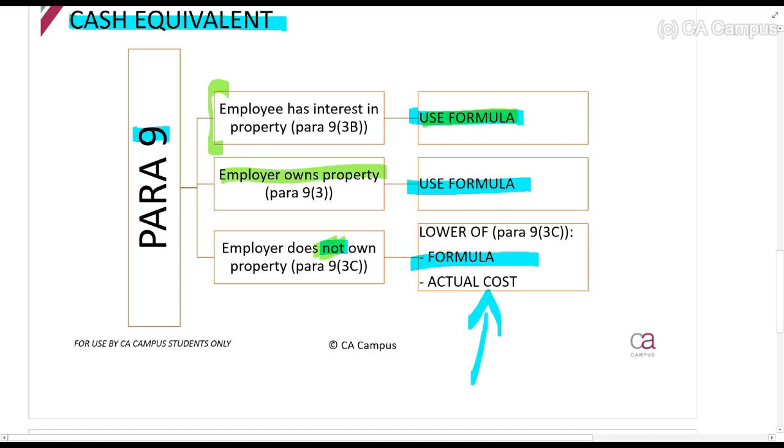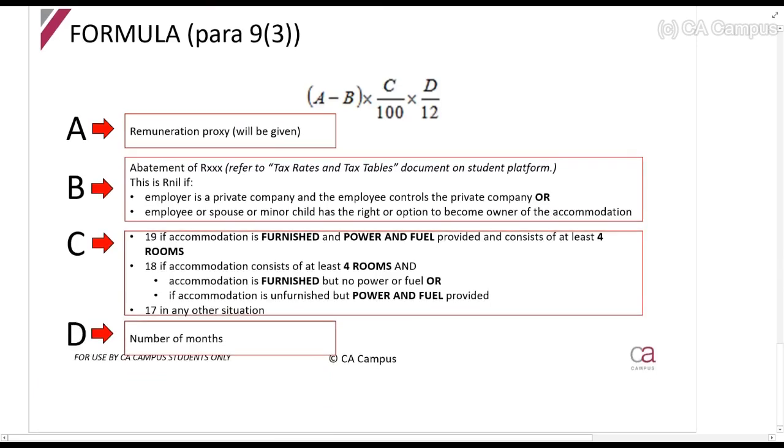So what is the formula? You can find it in your act as well: (A - B) × C/100 × D/12. First thing is A. A is the remuneration proxy - this amount will be given to you in the exam. The idea of the remuneration proxy is basically the previous year's salary that the employee earned.